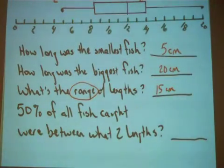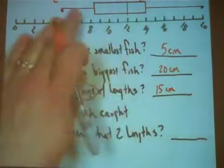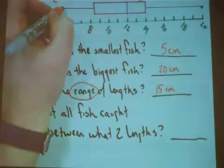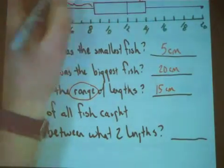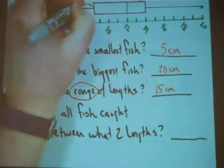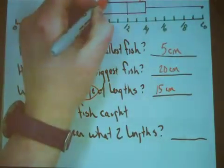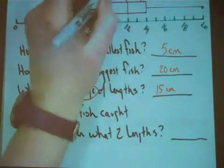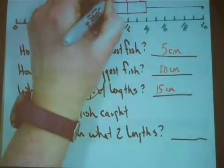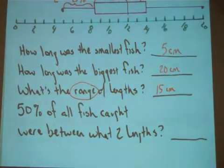Okay, now here's where we find out if you really understand what a box-and-whisker plot is representing. This whisker is representing 25% of the data. This portion of the box is representing 25% of the data.